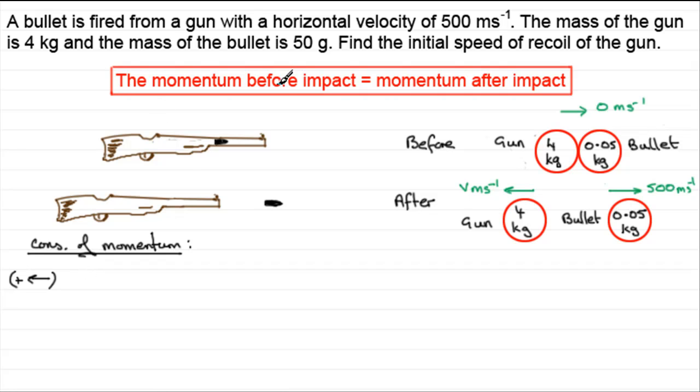Applying the conservation of momentum, the momentum before impact, what we've got is the initial mass of the gun, 4, times its velocity. Well, its velocity was 0. Then we've got to add the momentum of the bullet. The mass is 0.05, and its velocity also is 0. So this is a bit pointless, you may say, because it's just going to come to 0, but it just shows you how we formulate our equation. So this is the momentum before impact, and this is going to equal the momentum after impact.